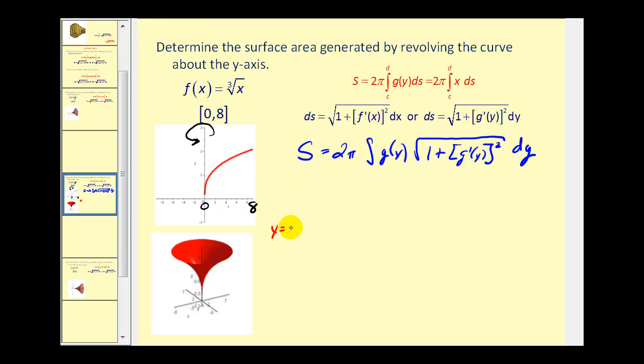If we have y = x^(1/3) and we cube both sides of the equation, we'll have y³ = x. So using function notation, g(y) = y³, and the derivative of g with respect to y is 3y².